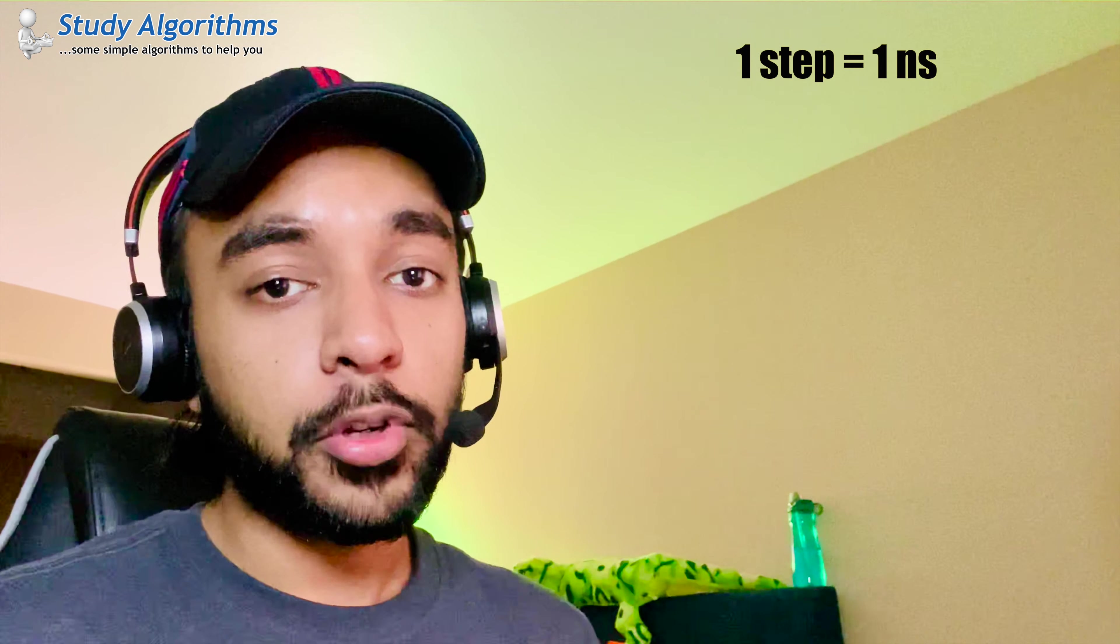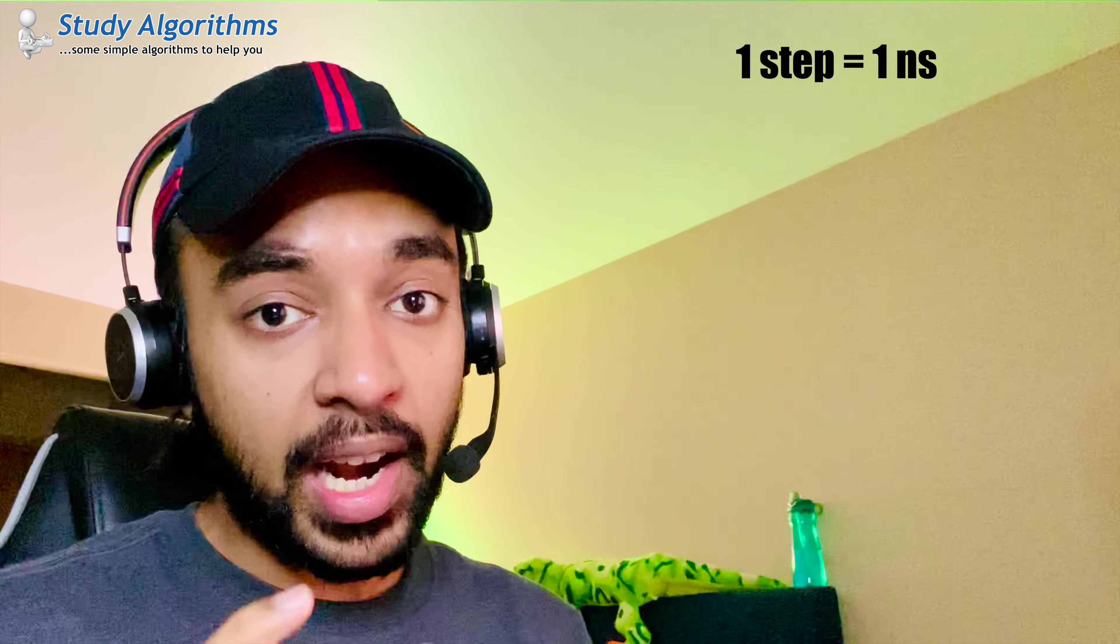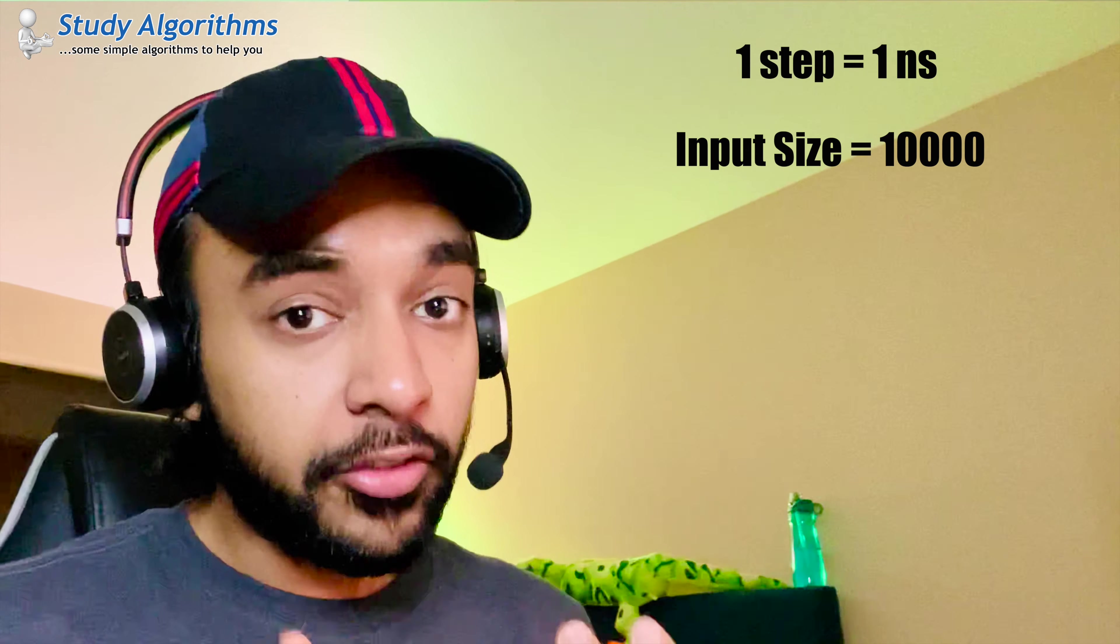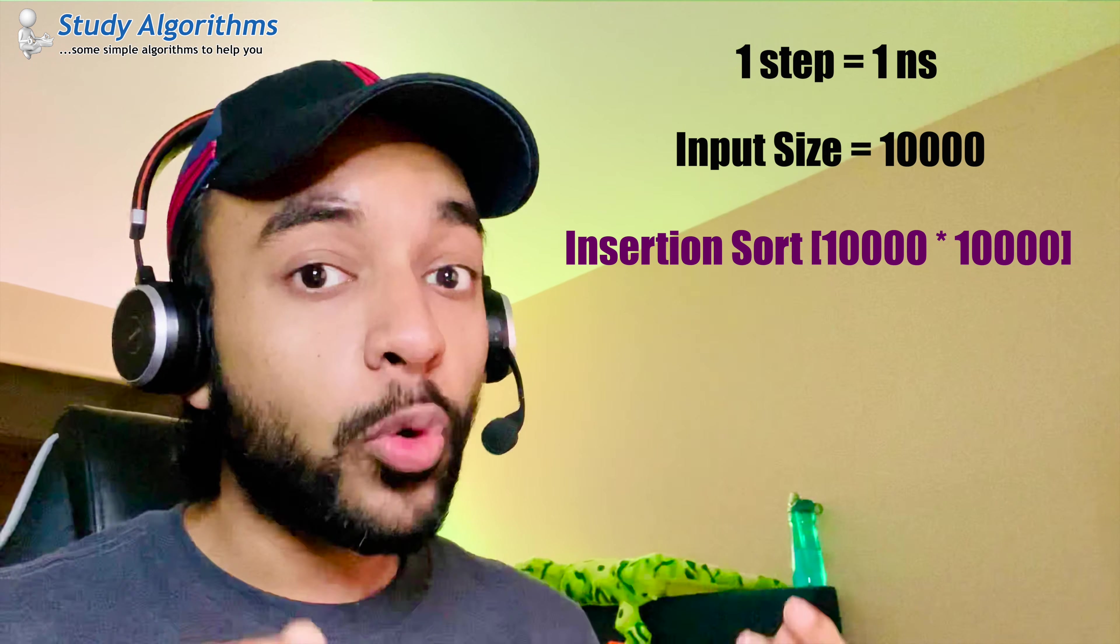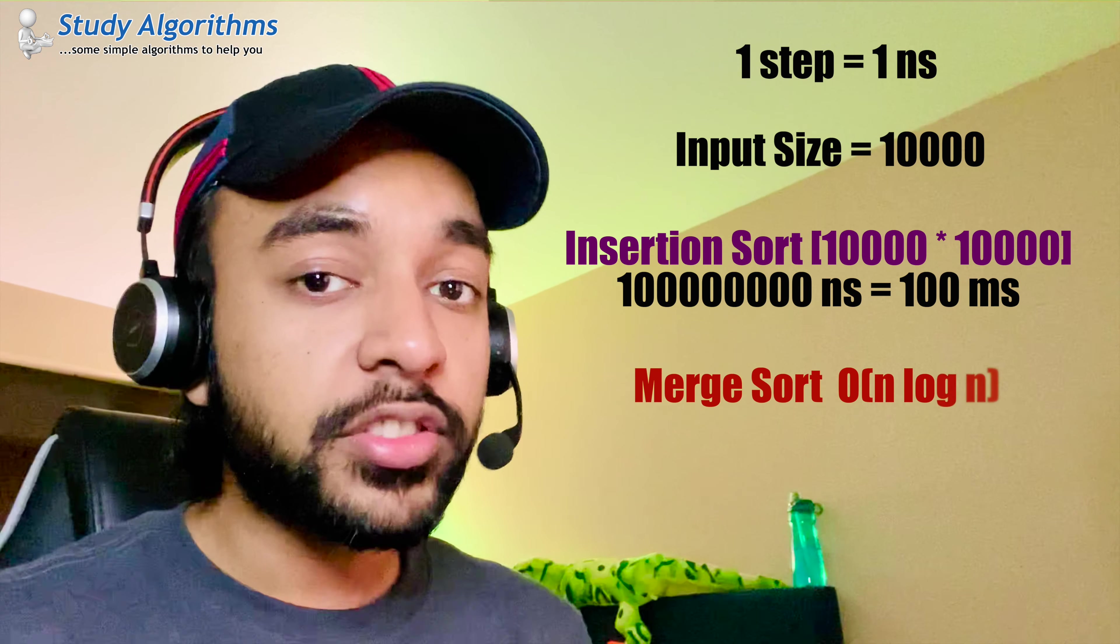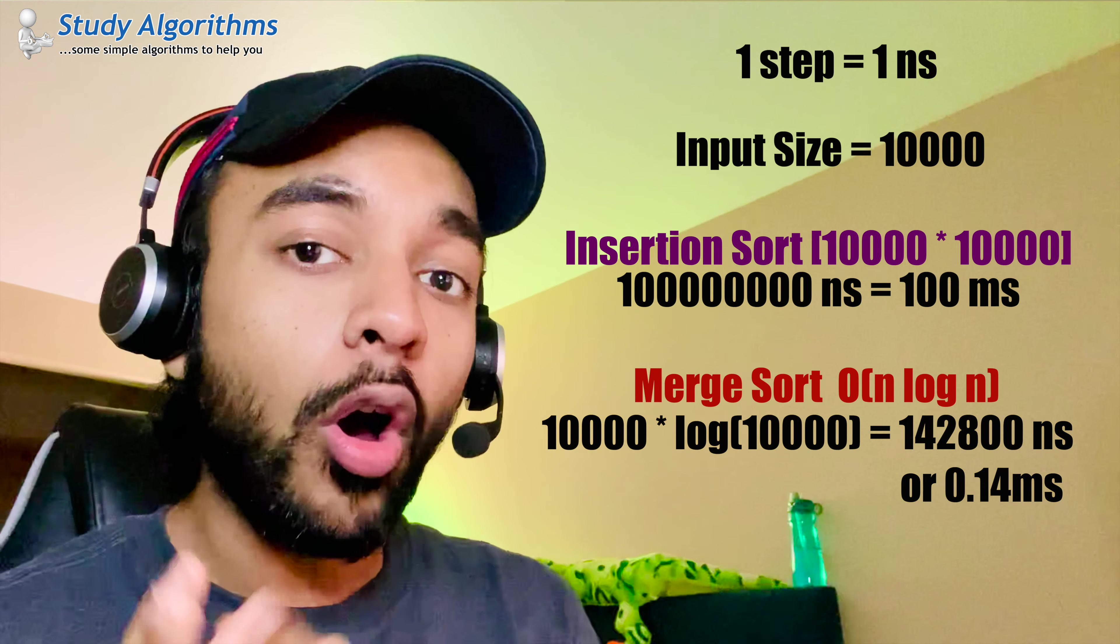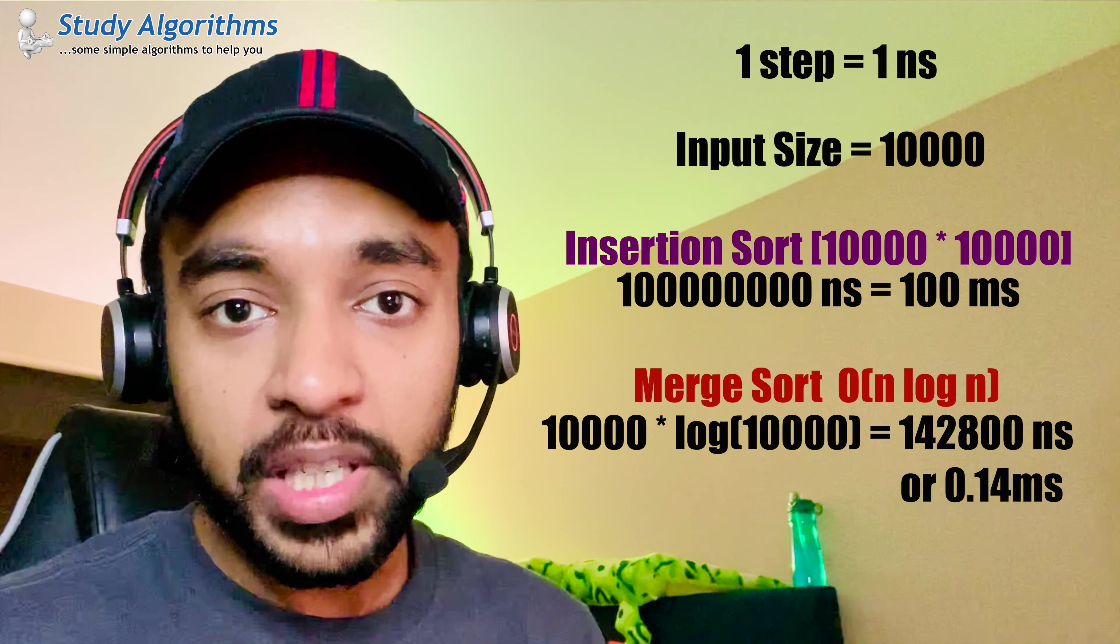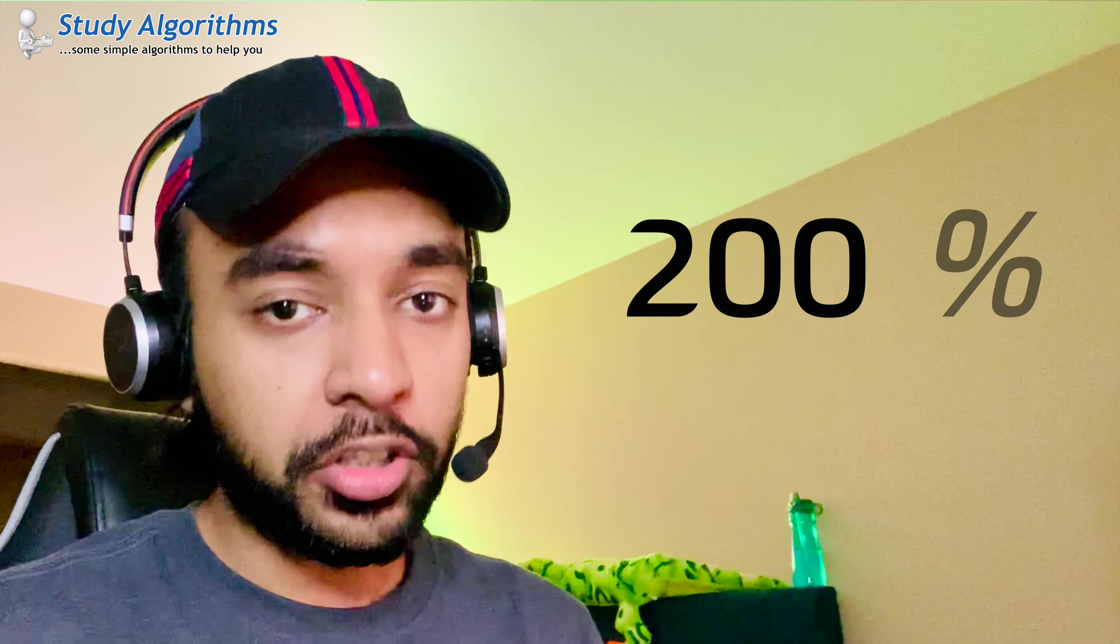I hope I was able to simplify merge sort and it's working for you. I just took the example of numbers but this technique works for any sort of input set that follows a certain sequence. As per my departing thoughts, I want you to understand how much of a difference this time complexity can make. Think about this. Suppose your computer takes 1 nanosecond to complete one step. And, your input size is 10,000 elements. In a worst case scenario, insertion sort would be taking up 10,000 squared number of steps. That is equivalent to 100 milliseconds. Whereas, if you are using the merge sort algorithm, you are taking 10,000 into log n number of steps. That is equivalent to 0.14 milliseconds. That is like a 200% improve in your speed. And, hence using merge sort will overall improve the performance of your code.